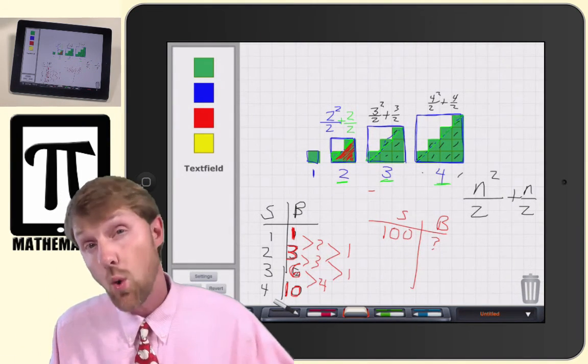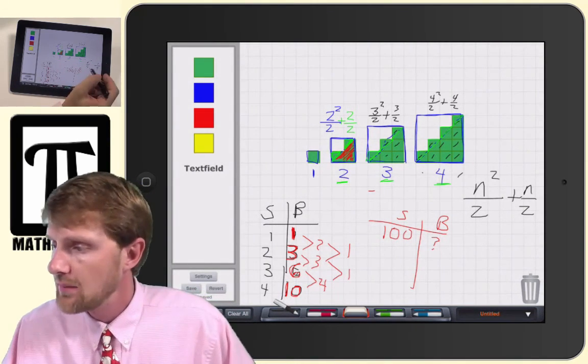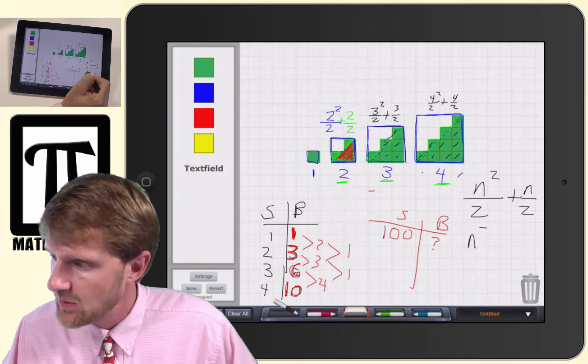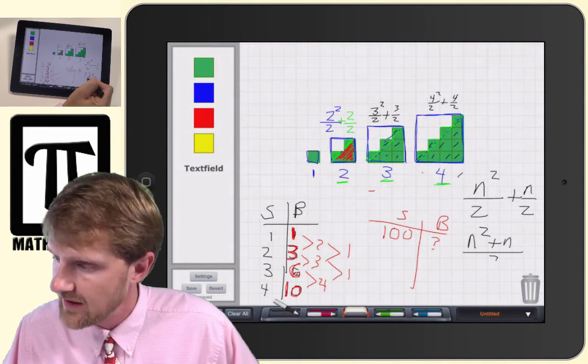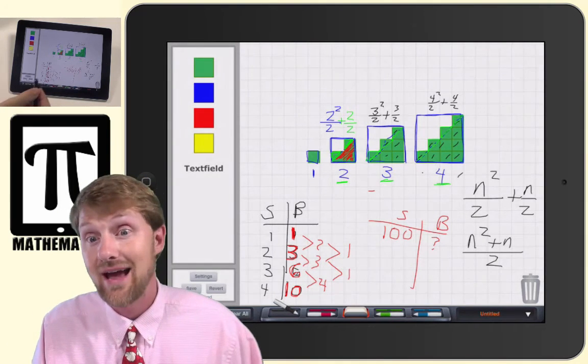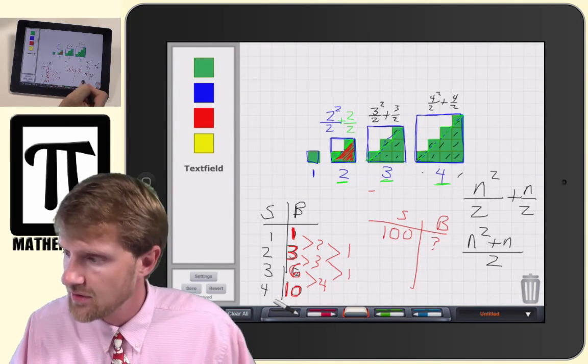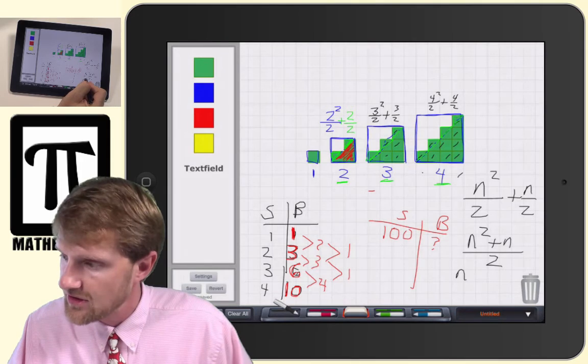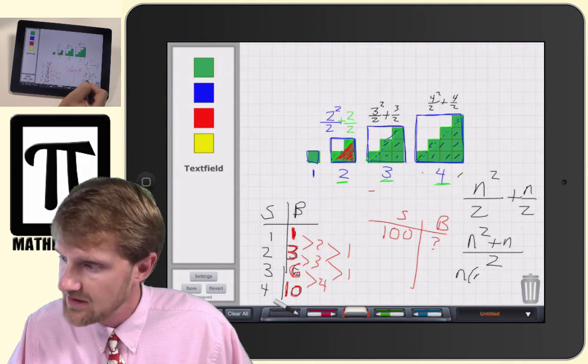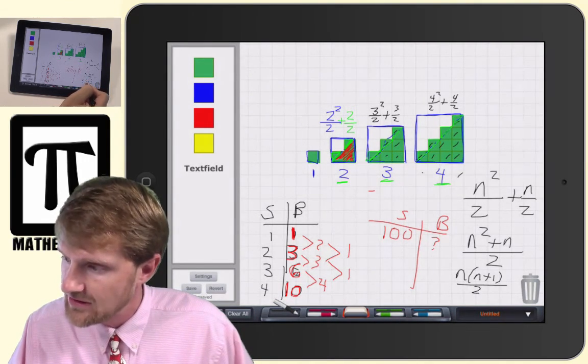And with our wonderful algebra, we're able to see that that's going to be n squared plus n, all divided by two. And then the algebra goes even farther. We can factor the n out, so it's going to be n times n plus one divided by two.